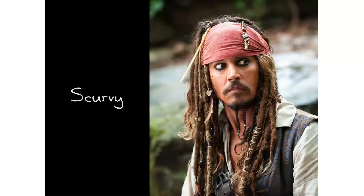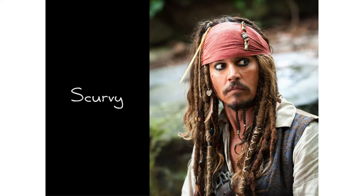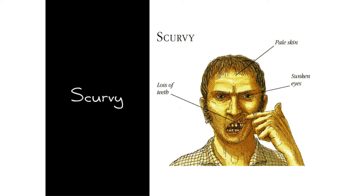But we need to take a step backwards and talk about scurvy. Who knows what scurvy is? In Polish, this is 'skorbut' — more hands go up. Scurvy is this terrible disease where your teeth fall out, your skin is really pale. Basically your body is slowly disintegrating, and then you die.